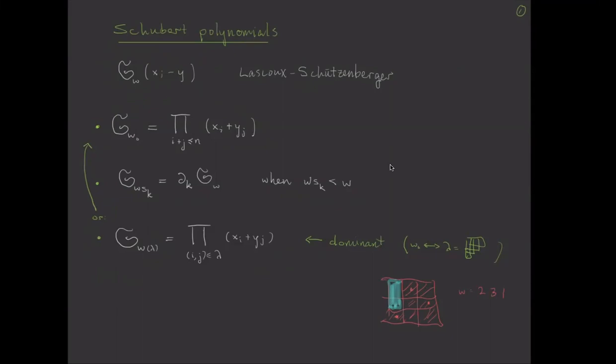The Rothe diagram of a dominant permutation should just be a partition, kind of upper left justified. And that partition is the partition lambda I'm talking about. So for this example, we would see that the Schubert polynomial is just, in this case, x_1 plus y_1, x_2 plus y_1, because those are the two boxes in that partition. Dominant permutations are very easy to write down Schubert polynomials for. Since we have a formula for that, you can apply divided difference operators to that one and get a formula for any other Schubert polynomial that lies below your given dominant one. It is very much not efficient in general. Certainly if you start with the longest element and want to compute a small length element, it's going to take a lot of work. So we're looking for better formulas.